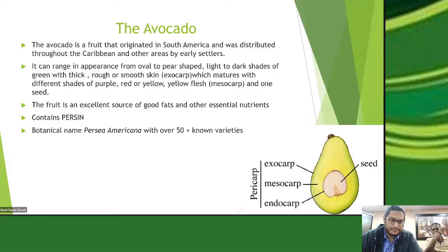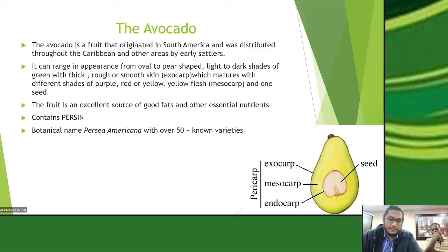The botanical name of the avocado plant is Persea americana — Persea because it's pear-shaped, and americana because it originated from South America. There are over 50 known varieties. In Trinidad, there are four to five main varieties cultivated, but at St. Augustine Issues we only deal with the Pollock and the Lula, and we will talk about those in the next slide.